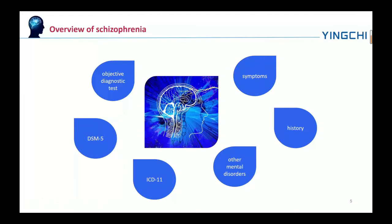To diagnose someone with schizophrenia, doctors are supposed to confirm that symptoms and functional impairment are present for six months according to DSM-5, or one month according to ICD-11. Many people with schizophrenia have other mental disorders, especially substance use disorders, depressive disorders, anxiety disorders, and obsessive-compulsive disorder.